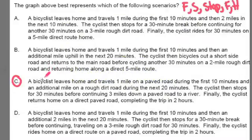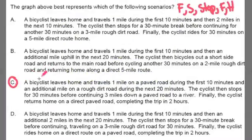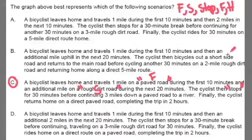Everyone, re-read C for a moment. It says, a bicyclist leaves home and travels 1 mile on a paved road. Paved road, that's code for going fast. During the first 10 minutes and an additional mile on a rough dirt road during the next 20 minutes. Rough dirt road, that's code for going slow. The cyclist then stops for 30 minutes. Stops is like they have lunch, right?